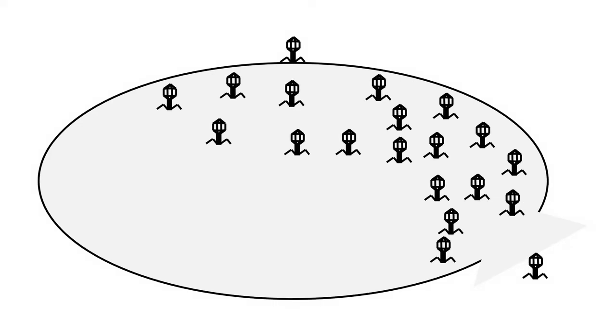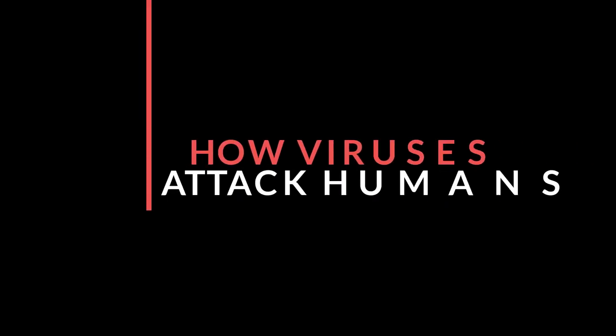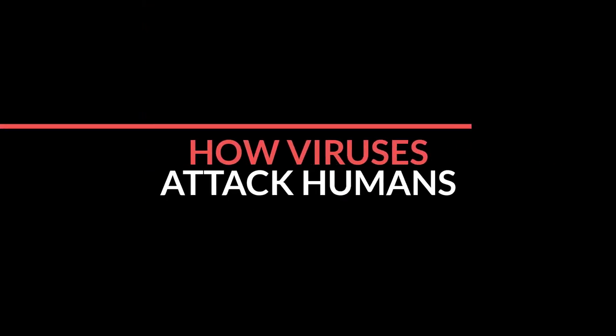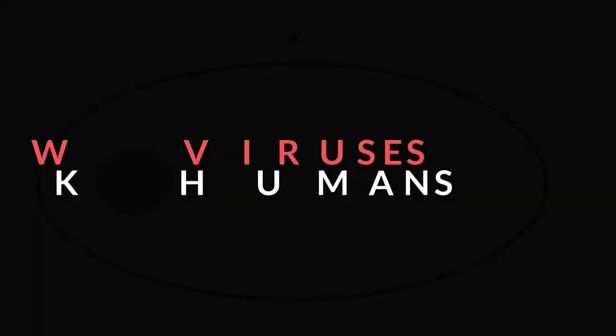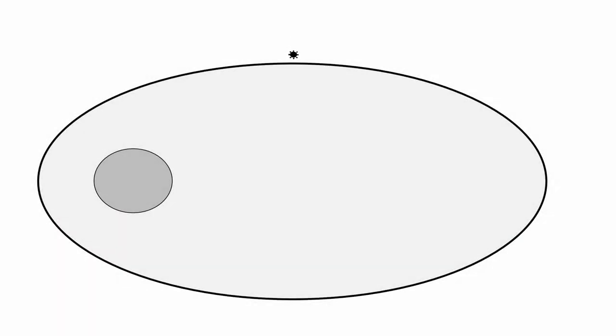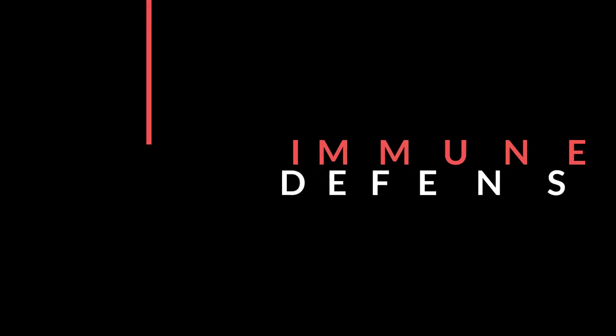Now even though phage don't attack animal cells, there are other kinds of viruses that of course do attack animal cells. And these are of course the viral diseases that we all know. Now in some cases, the process is pretty similar. They attach and insert the bad code. In other cases, the whole virus actually gets into the cell somehow, and it takes over the cellular machinery. Now the body's defenses do try to fight off viruses.